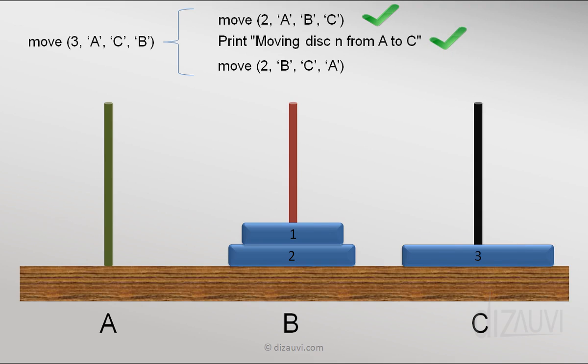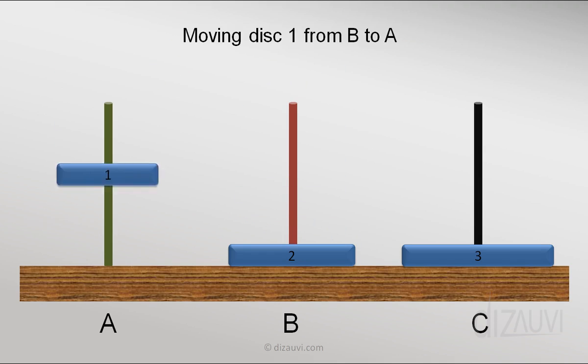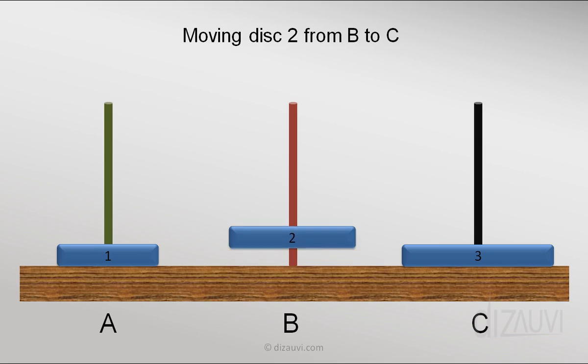And finally we move these two disks from B to C using tower A. And if we see the details, that is what we end up doing, right?